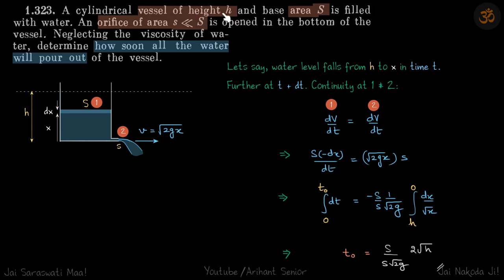We have a vessel of height h filled with water. The base area is S and there's a small orifice at the bottom of area s. We need to determine how soon the water will pour out.